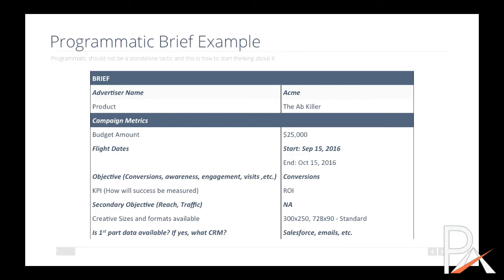Creative sizes available are basically two standard formats. First-party data available: no, in this case. Like I said, this is a very basic brief, but at least it gives us something. Ideally you want to know what first-party data is available, how much, the geography you should be focusing on, and about ten other things — I'd probably upload an Excel template for you to download and use.